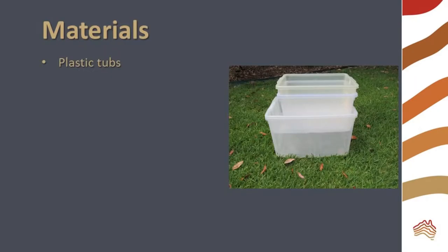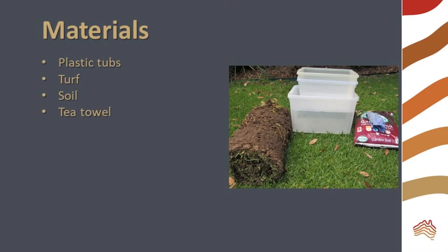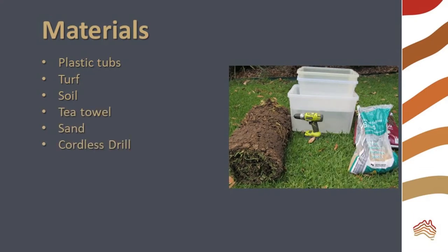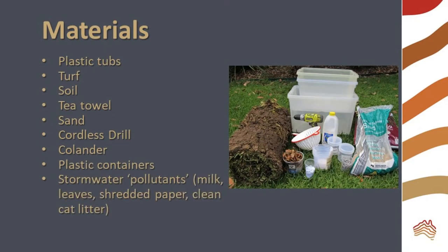You will need plastic tubs, some turf, soil, an old tea towel, sand, a cordless drill, a colander, some plastic containers, and some model pollutants for your stormwater. I'm using milk to represent liquid pollutants, shredded paper as litter, clean cat litter for animal waste, and real stormwater pollutants of leaves, soil, and sand.